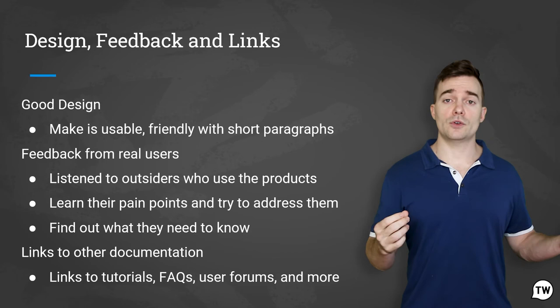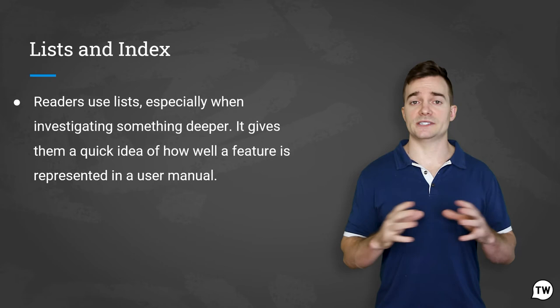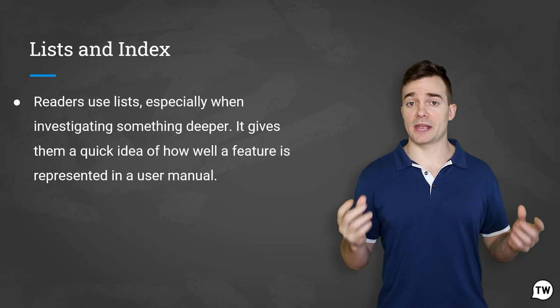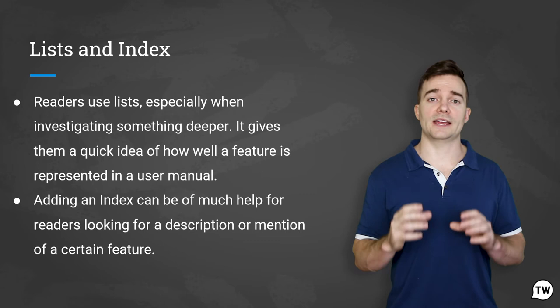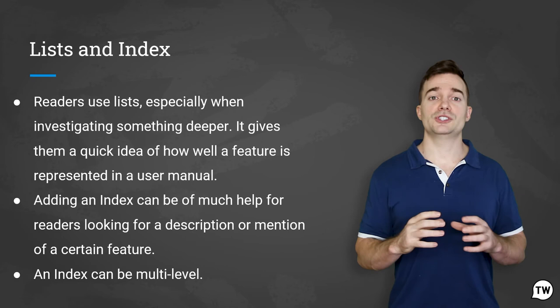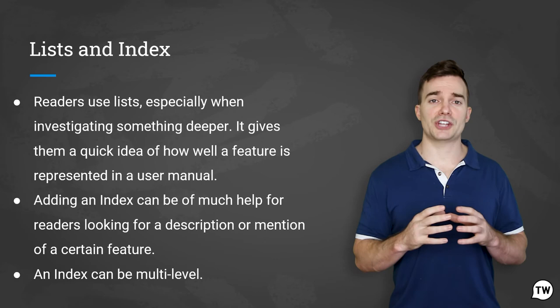Readers use lists, especially when investigating something deeper — they give a quick idea of how well a feature is represented in a user manual. Adding an index can be of much help for readers looking for a description or mention of a certain feature. Alongside search, this is a sure way to find a whole list of relevant help topics with just a couple of clicks. An index can be multi-level, meaning you can add child terms to a broader parent term, adding visual representation to the most difficult concepts.